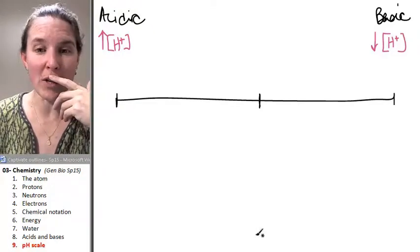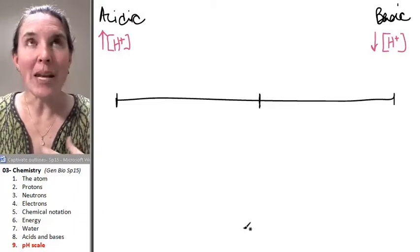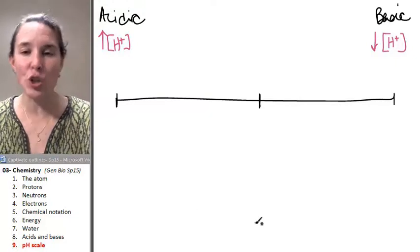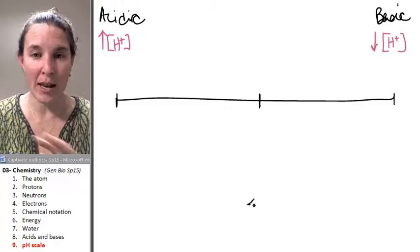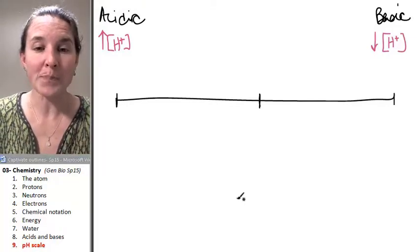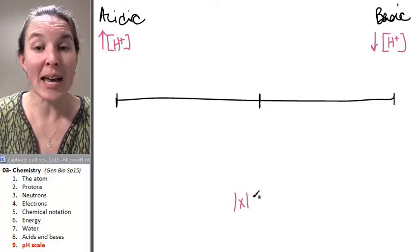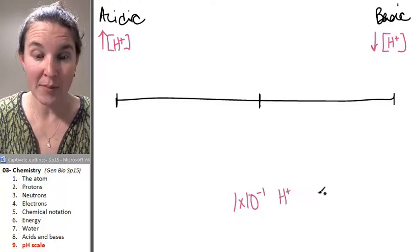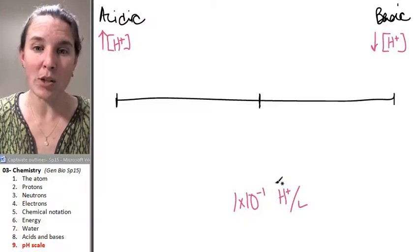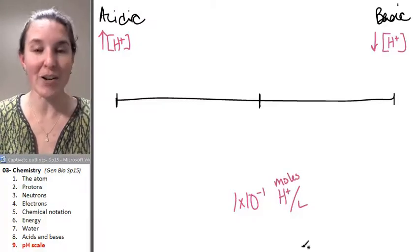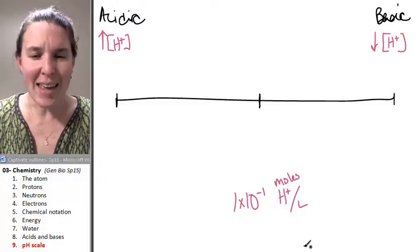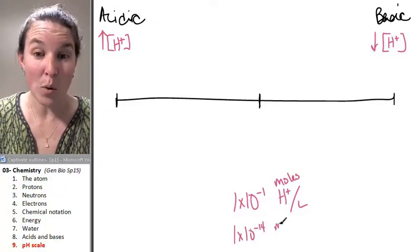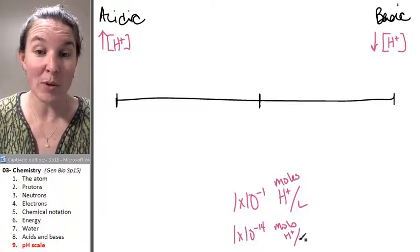I'm going to actually give you a number. I'm going to give you a molarity, a concentration of hydrogen ions. And I'm going to give you two to start off with. I have one times ten to the negative one hydrogen ions per liter, moles of hydrogen ions per liter. And then the other number that I have is one times ten to the negative 14 moles of hydrogen ions per liter.